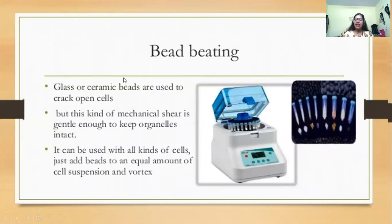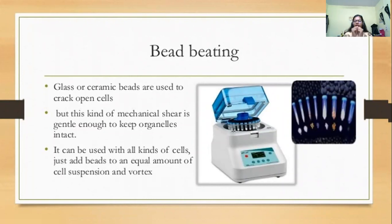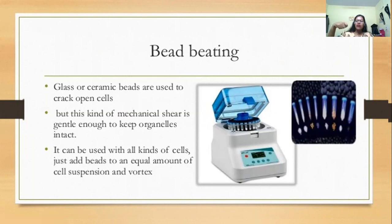In bead beating, beads made of glass or ceramic are added to your sample. Because of the shearing force between the beads, any cells that come into contact get crushed and the cell wall gets disrupted. This mechanical shear is gentle enough to keep organelles intact — so only the cell wall disrupts, not the organelles. It can be used with all kinds of cells. Just add beads to an equal amount of cell suspension and vortex using a machine.